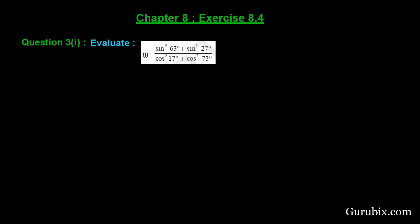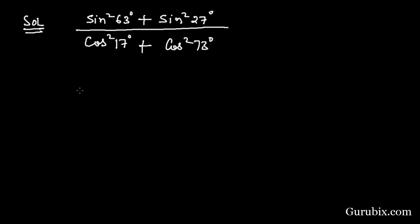So let us see how to solve this question. We have sine²63° + sine²27° over cos²17° + cos²73°. We can change it like this: sine(90° - 27°).